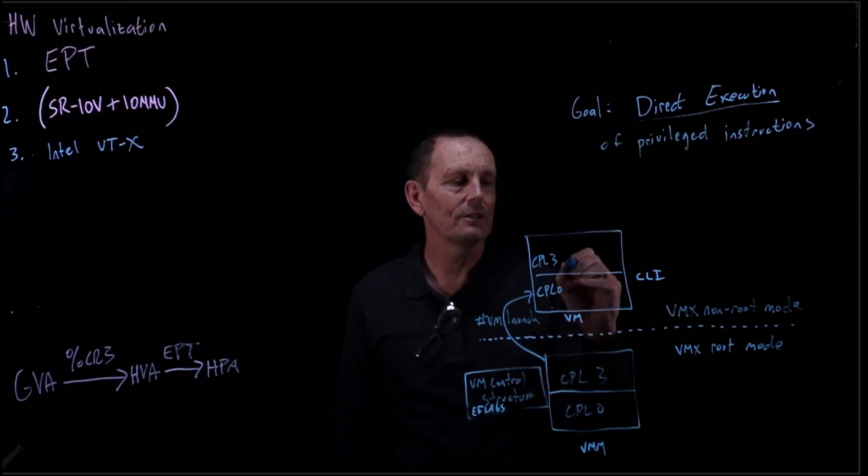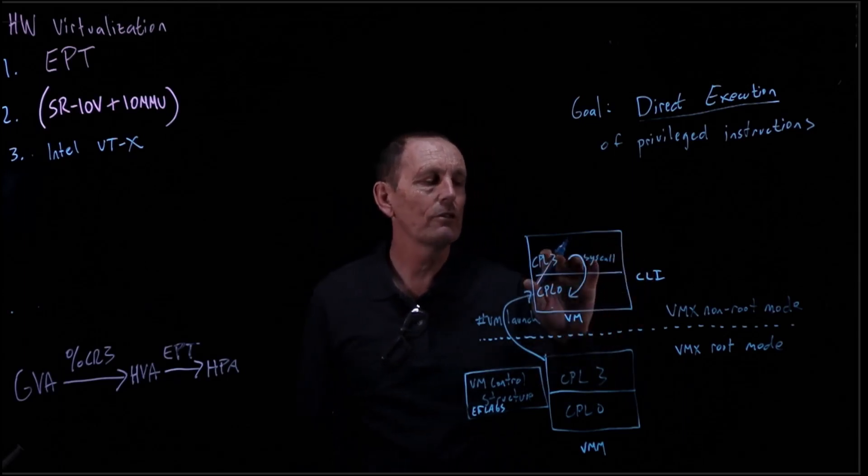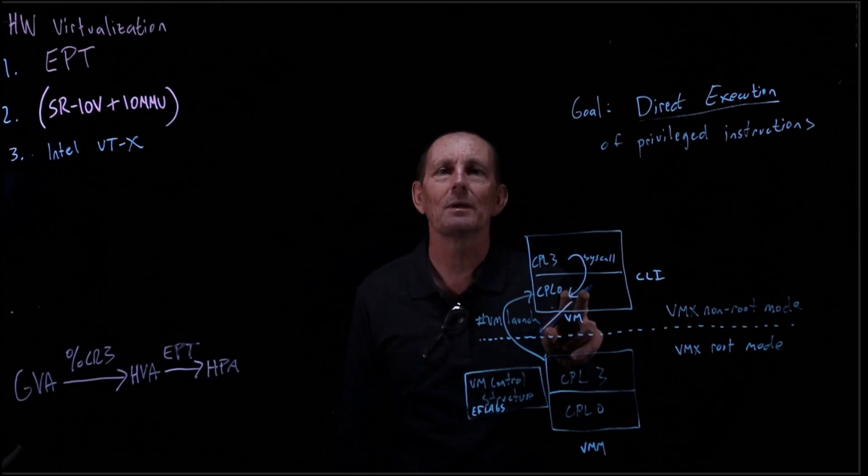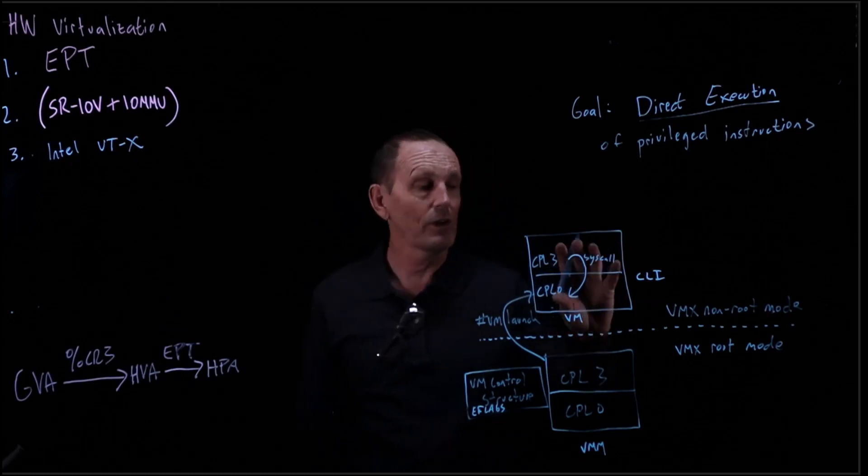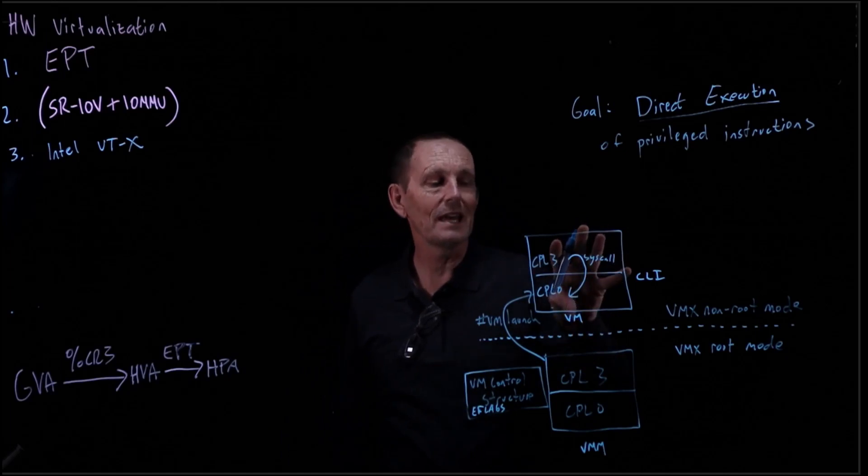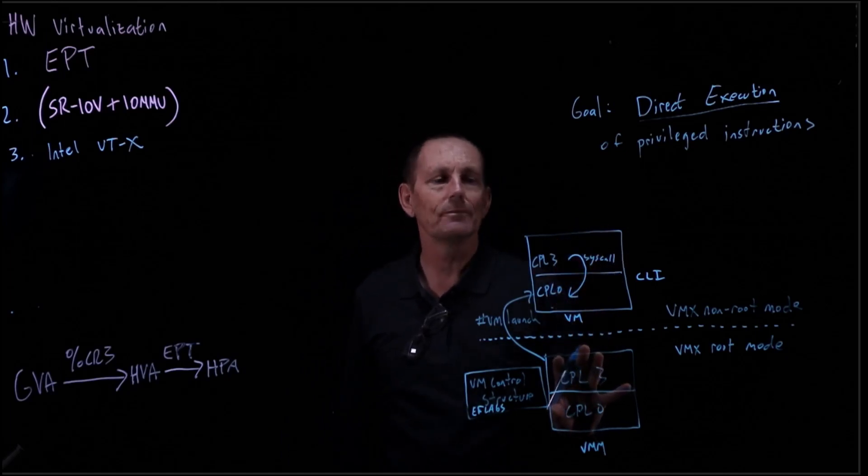This VM that's running in non-root mode can use CPL 0 and CPL 3. When a trap happens, for example, let's say a system call, that will go from the CPL 3 to the CPL 0. There's no trap in emulate. The hardware is just supporting this. There are some ways, of course, that you can get out of the VM back to the virtual machine monitor.